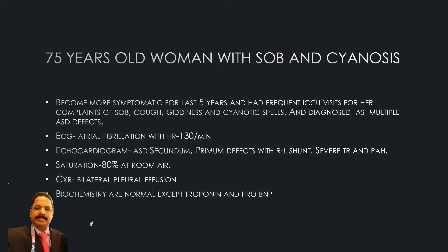Her ECG showed atrial fibrillation with a heart rate of 130 per minute. Her echocardiogram showed an ASD secundum and ASD primum with right-to-left shunt, severe tricuspid regurgitation, and severe pulmonary artery hypertension. Her oxygen saturation was 80 percent at room air. Chest X-ray showed bilateral pulmonary infection. Biochemistry was normal except for slightly elevated troponin and pro-brain natriuretic peptide.